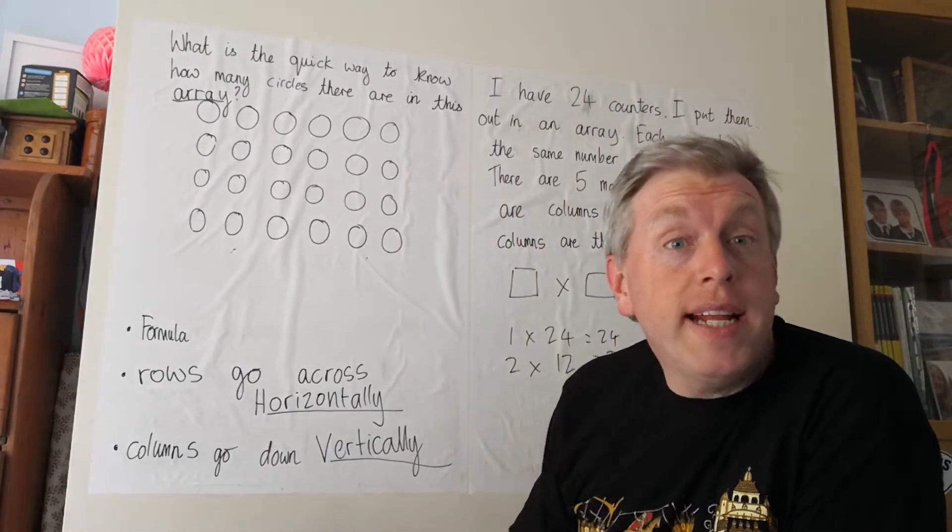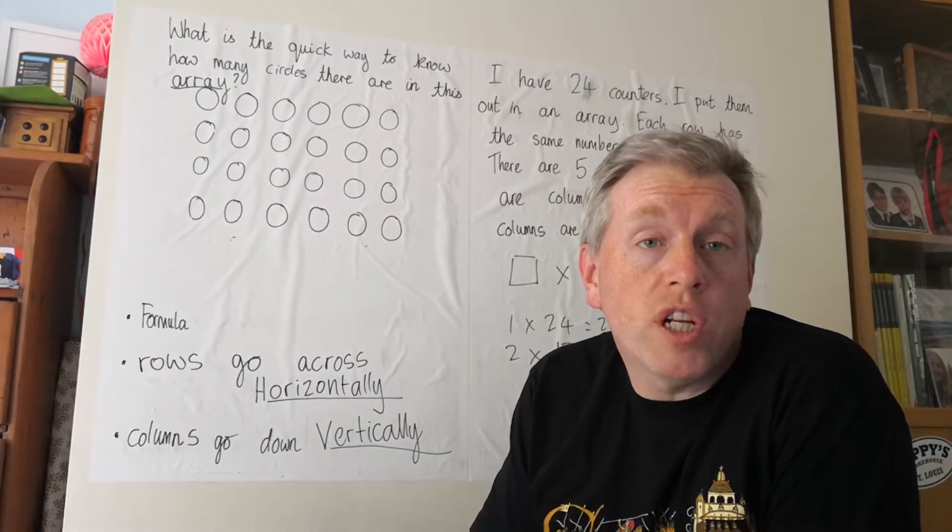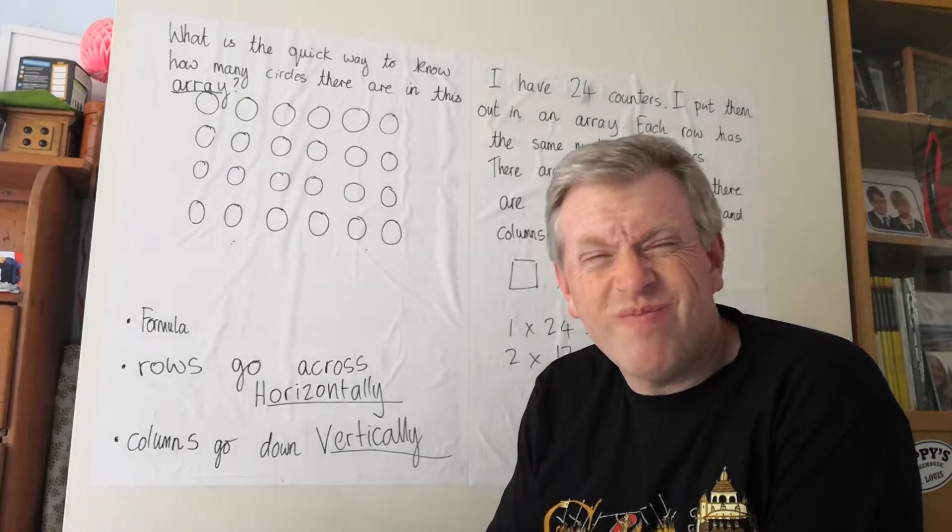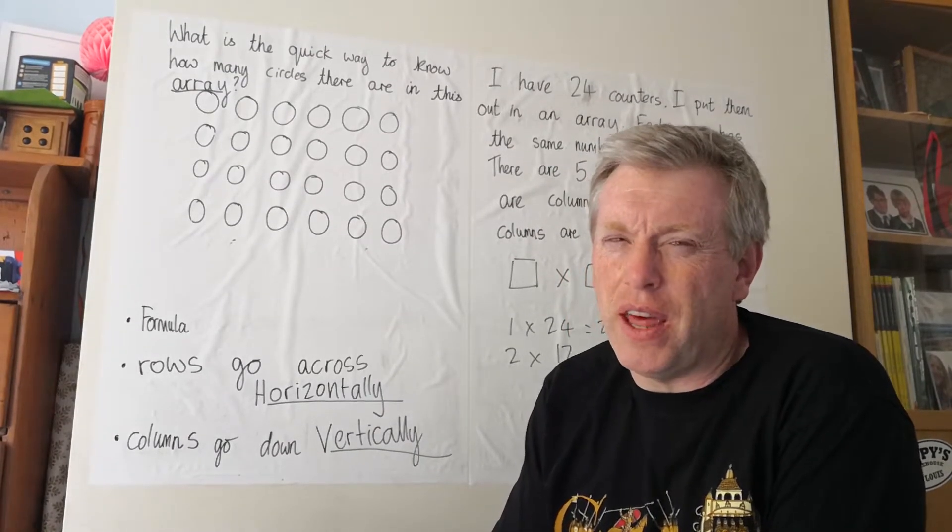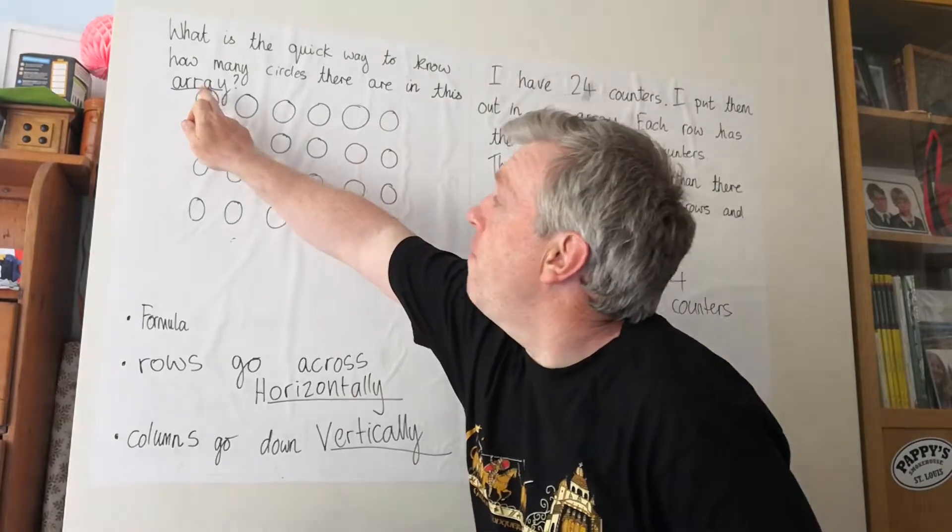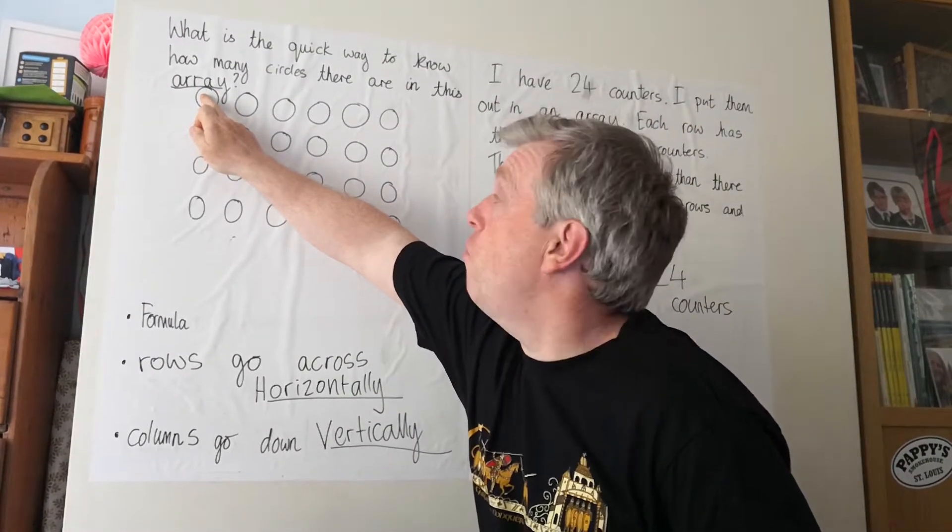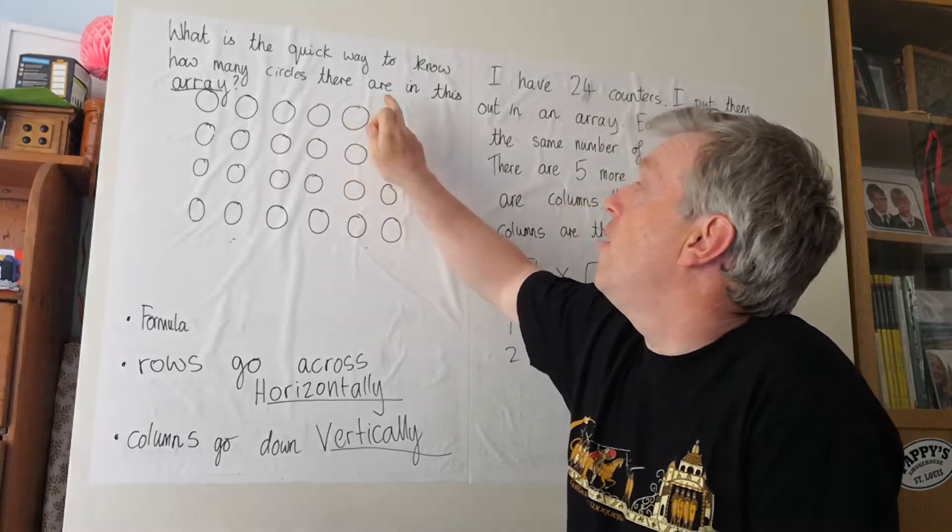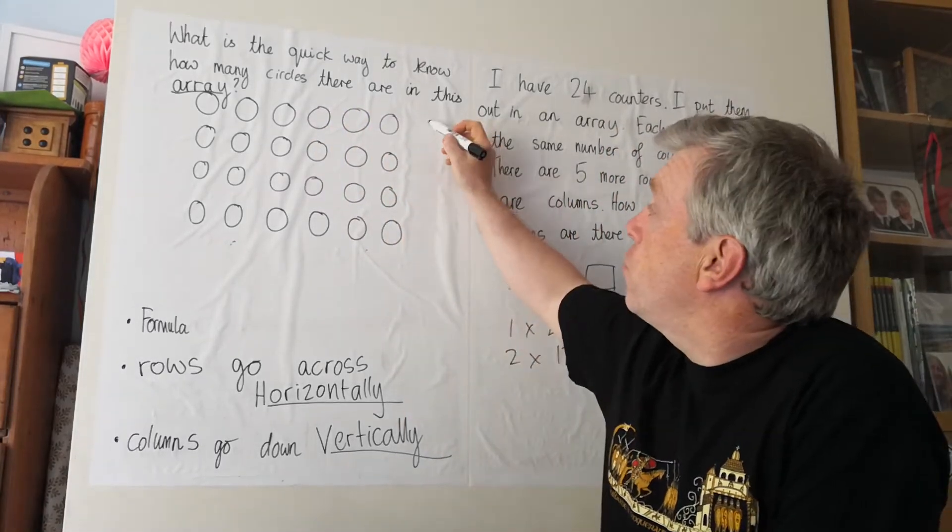So, do I need to count them all one by one to know how many there are? I could do. There's a better way to do it, isn't there? Look, first of all, for an array I'm going to count across in the row. One, two, three, four, five, six. Six in the first row.